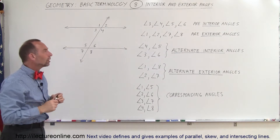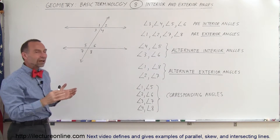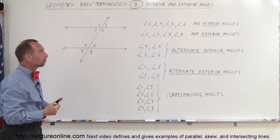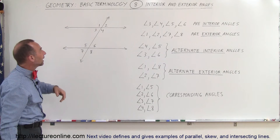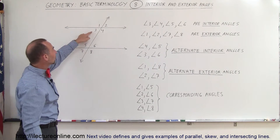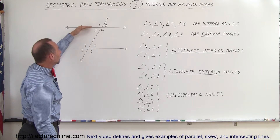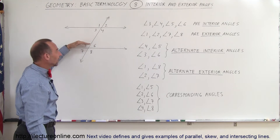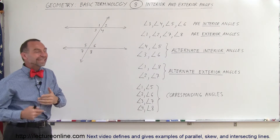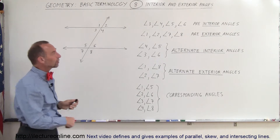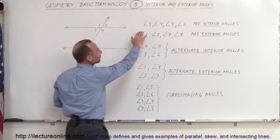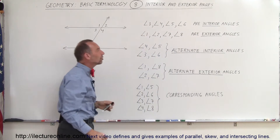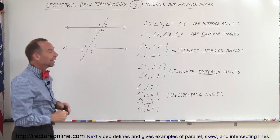They're related to one another in some fashion, so we have names for them. For example, angles 3, 4, 5, and 6 are between the two horizontal lines, so they're considered interior angles — 3, 4, 5, and 6 are called interior angles.